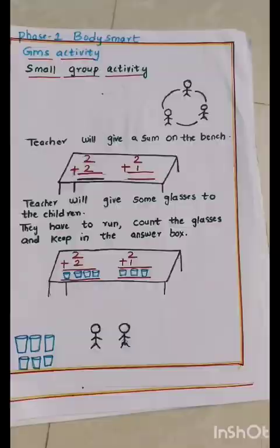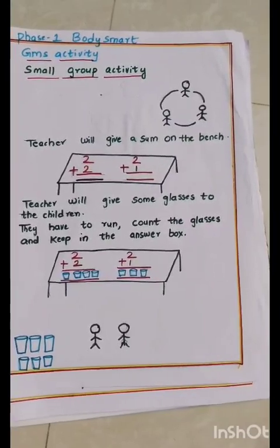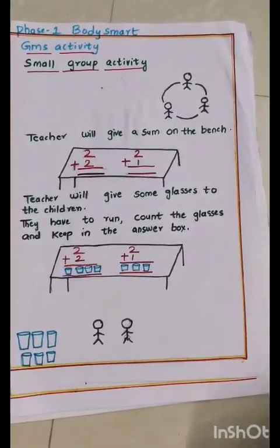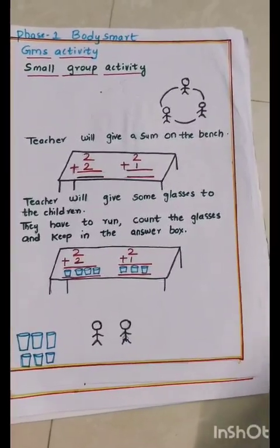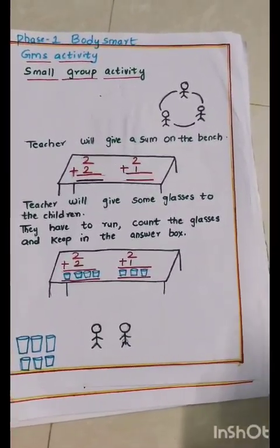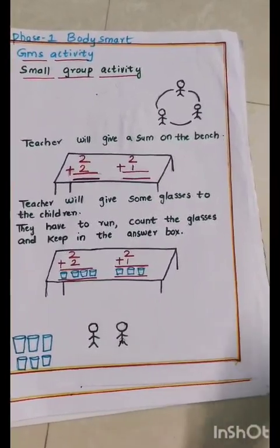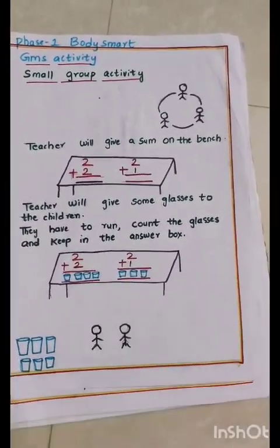Addition activity can be done with a small group of children. Teacher will give a sum on the bench. Then she will give some glasses to the children. They have to run, count the glasses and keep in the answer box.